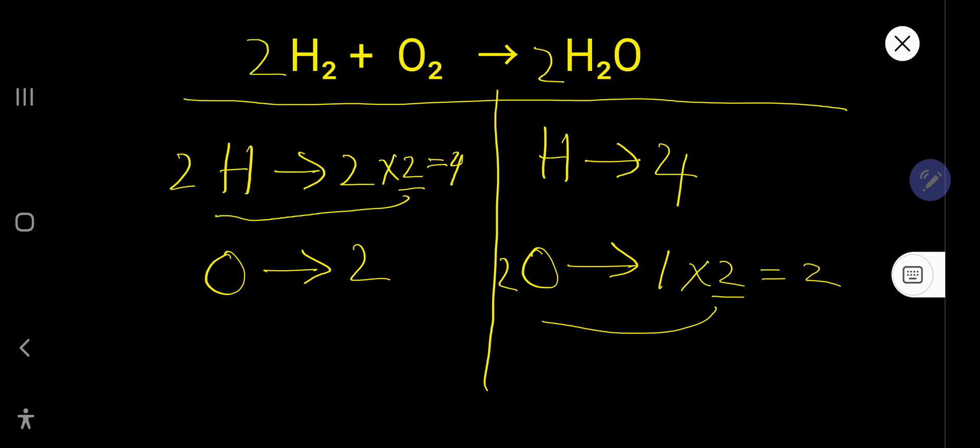So 4 hydrogen, 4 hydrogen, 2 oxygen, 2 oxygen. So this is the balanced chemical equation. At last, you have to use this arrow sign, don't use equal sign.